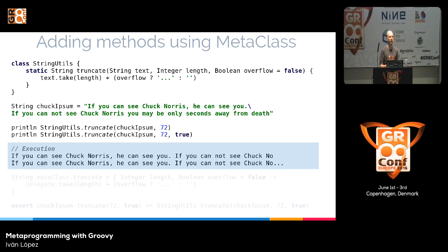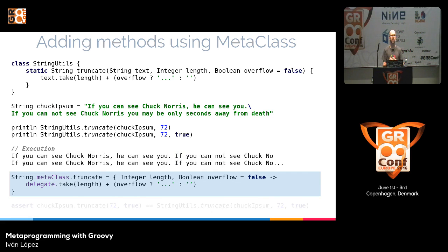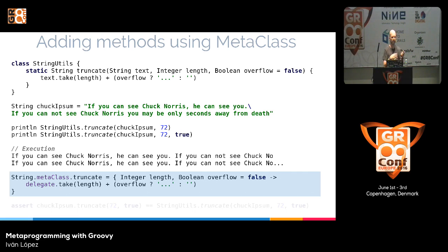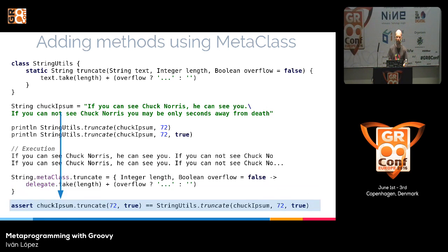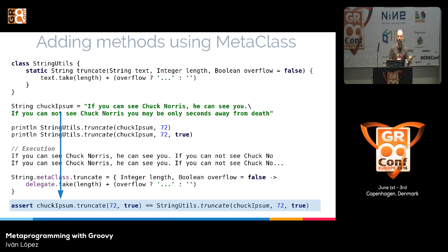But we're using Groovy, which is dynamic, so we can improve this code. We can modify the meta-class of the String class — remember, java.lang.String. The implementation is the same as before, but now the delegate is the instance on which we're executing the method. With this small modification on the meta-class of the String class, we can execute that method directly on a String instance. So now we can run chuckIpsum.truncate and it works, the same as calling the static method.